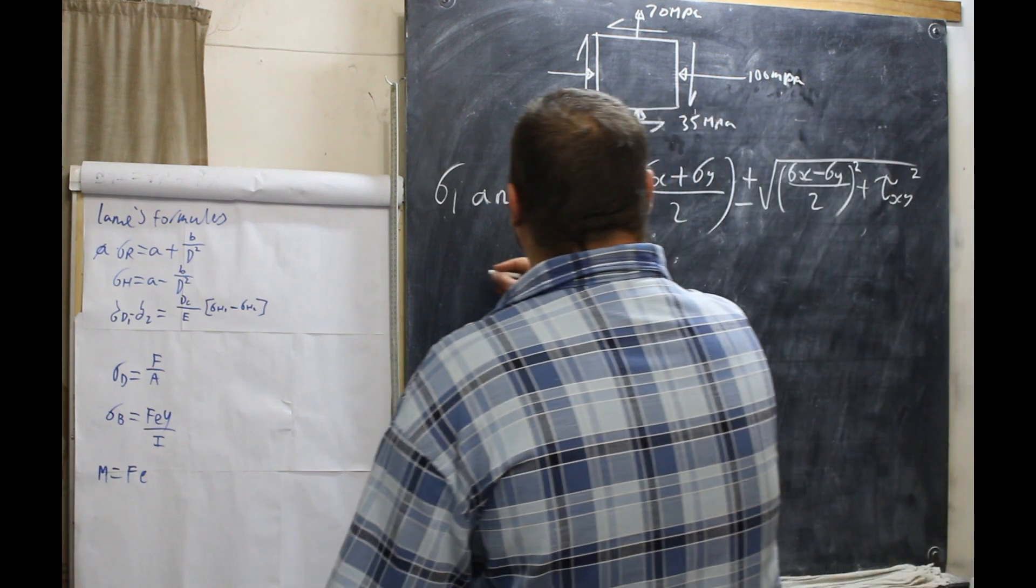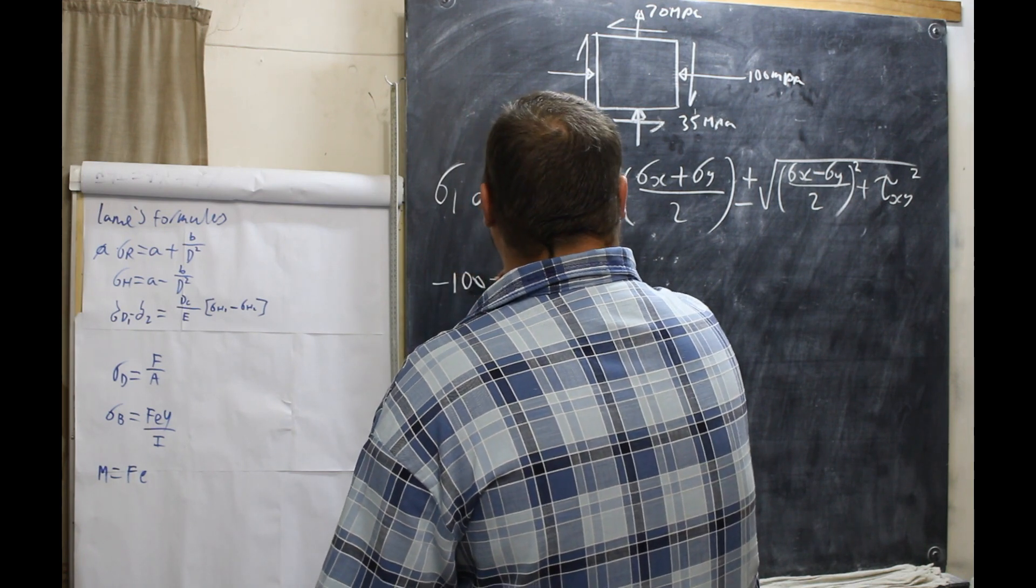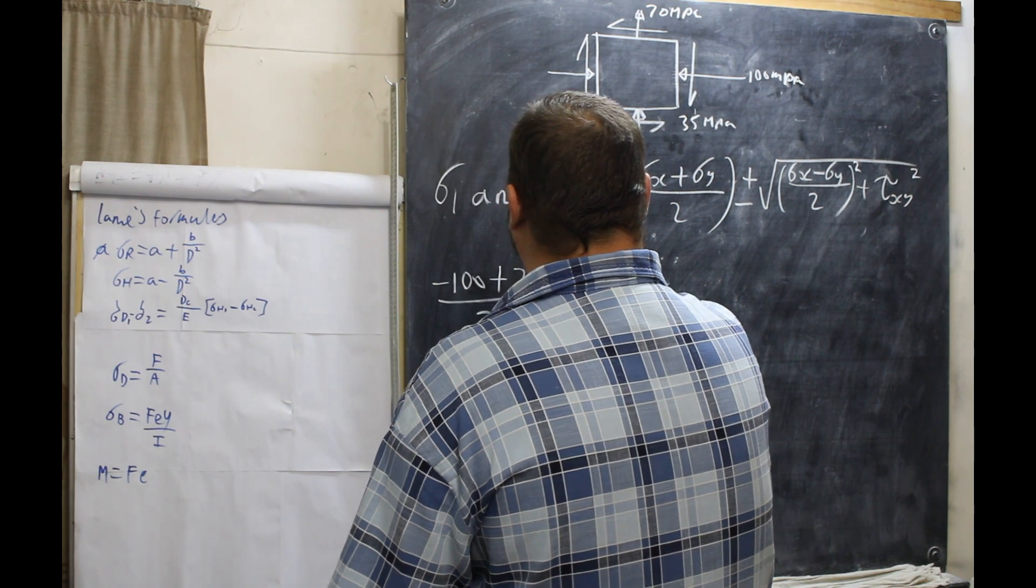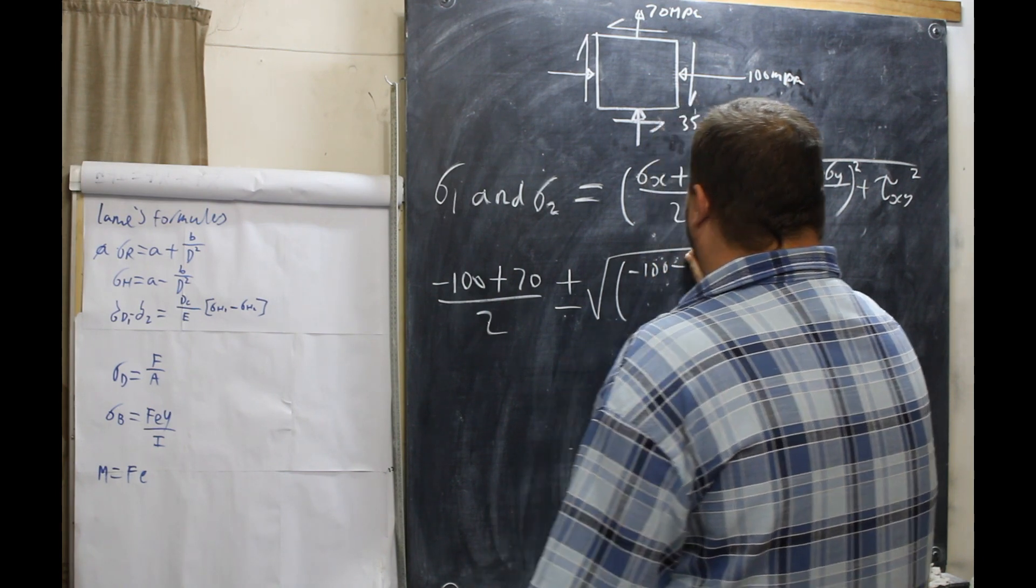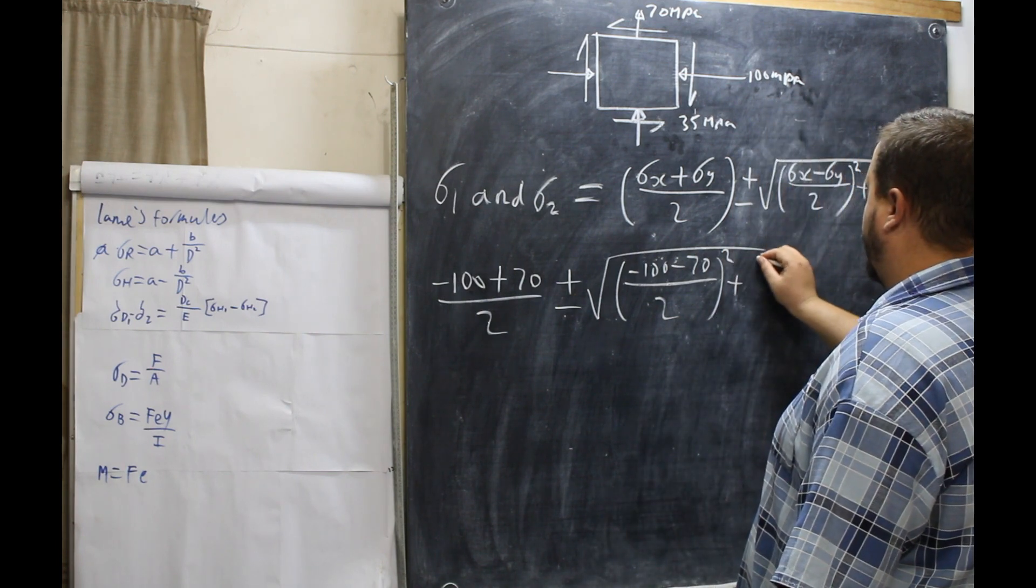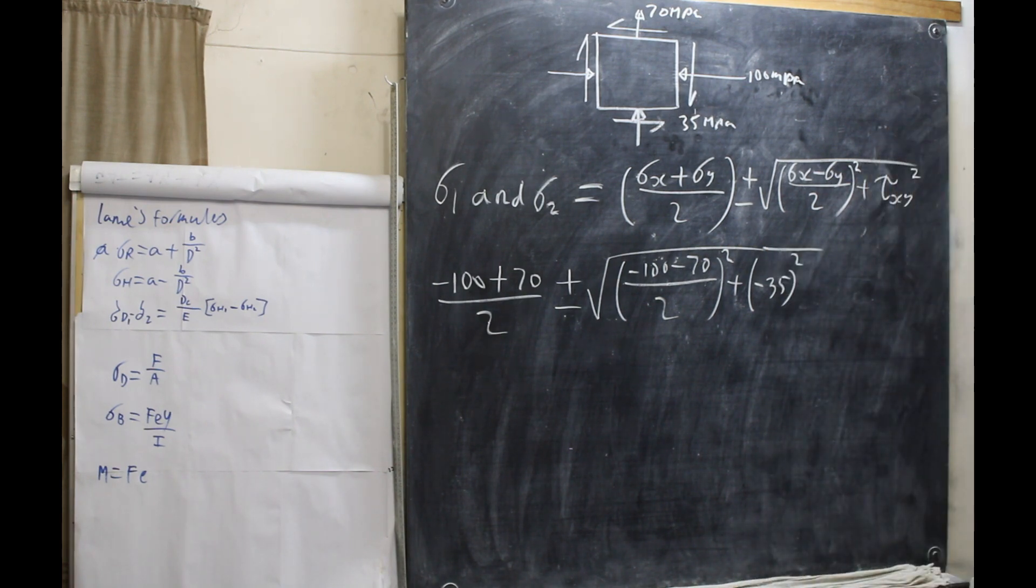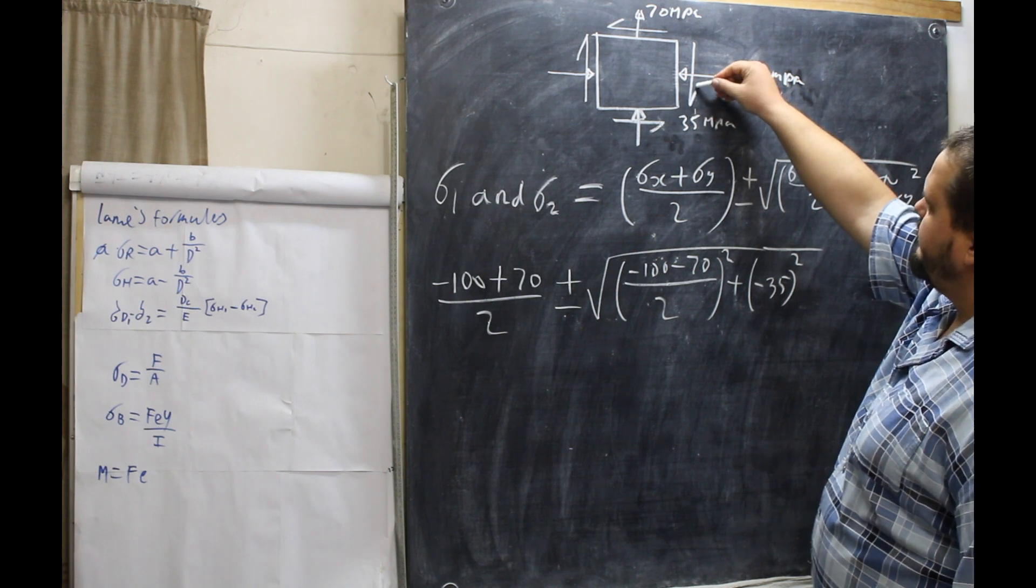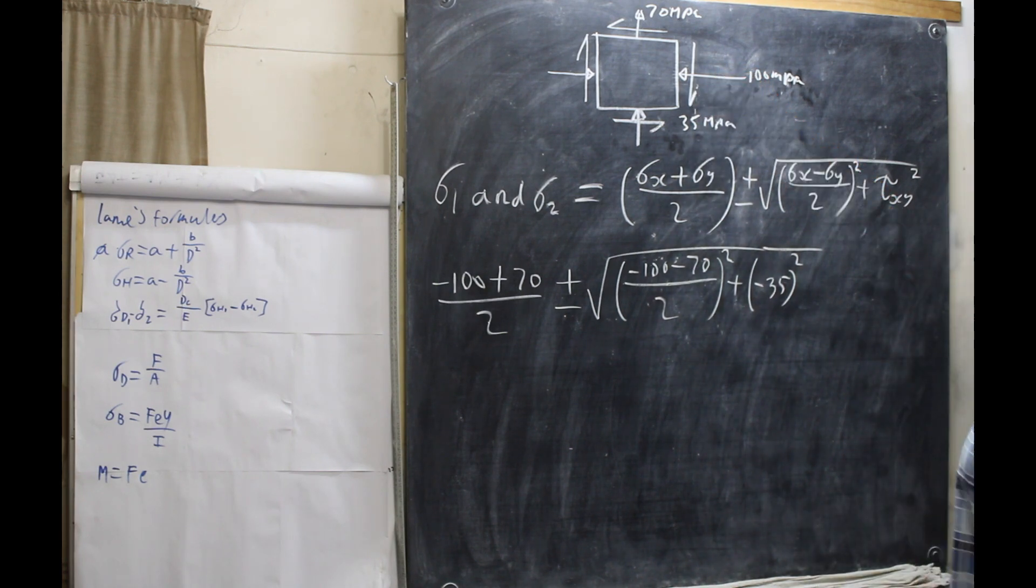So how this will look is minus 100 plus 70 over 2, plus or minus the root of minus 100 minus 70 all over 2 squared, plus minus 35 squared. The reason the 35 is minus is because this shear load that is acting here is going down. So, the next step.